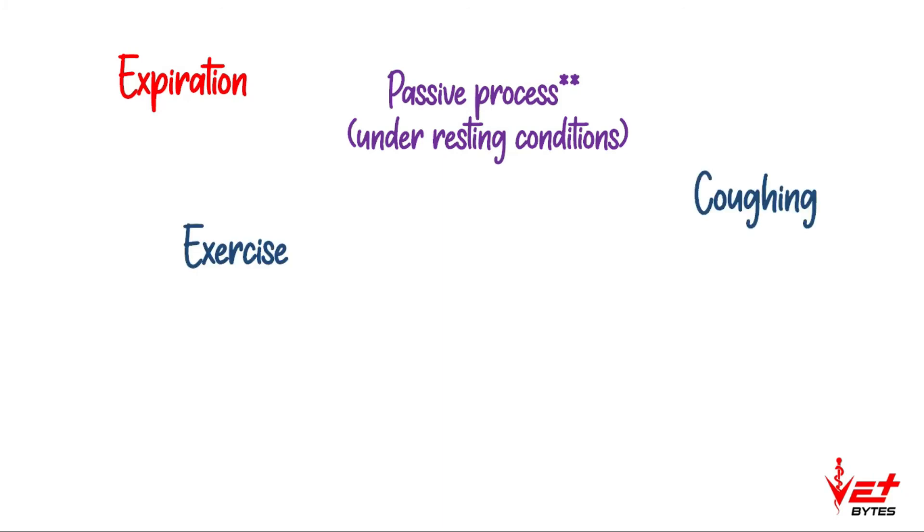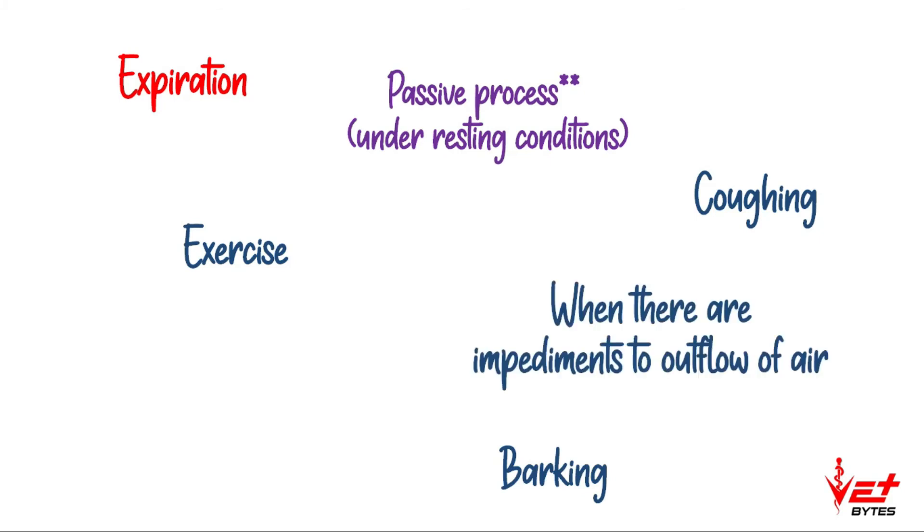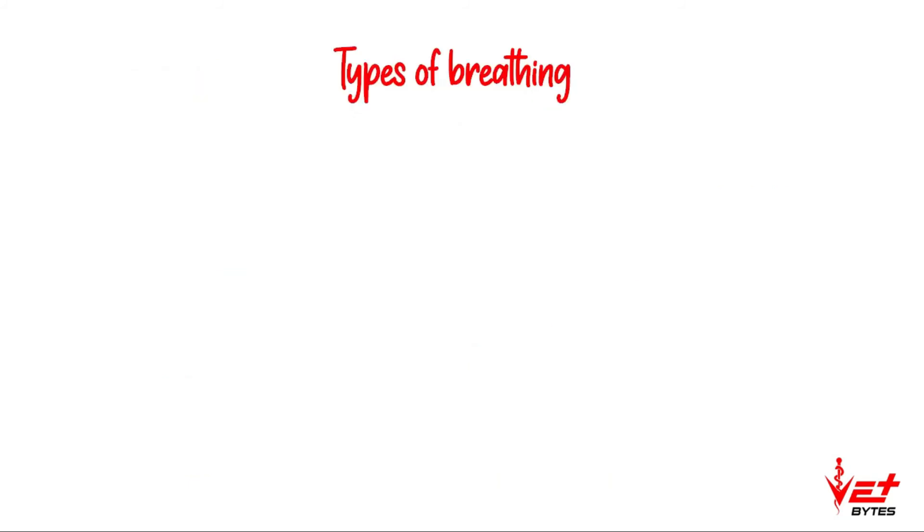Expiration occurs generally as a passive process under resting conditions, but active expiration is seen during exercise, coughing, barking, or when there are any impediments to outflow of air in the respiratory tract. In case of horses, the process is always active even under rest. Next is types of breathing.